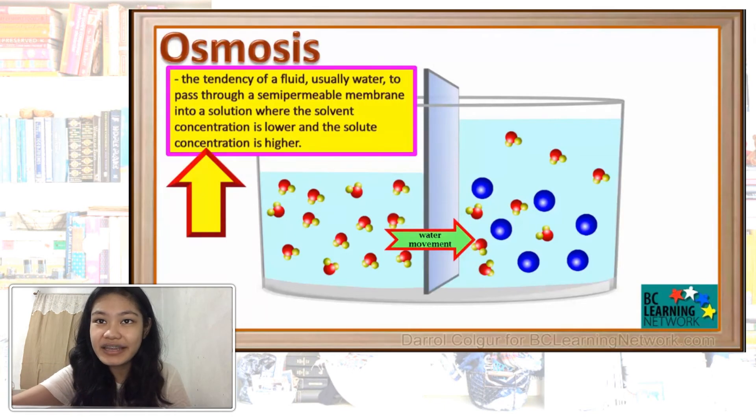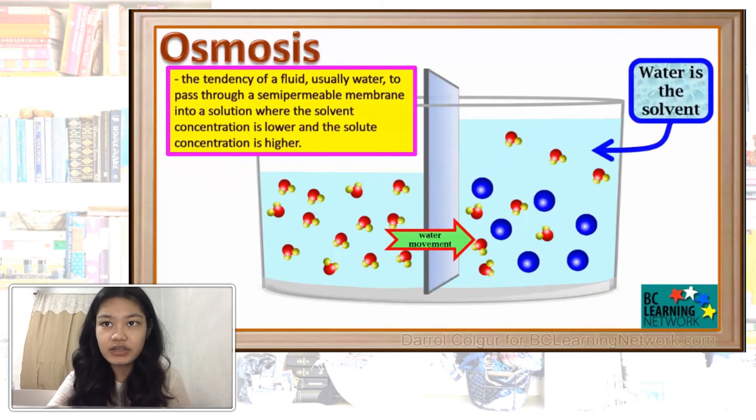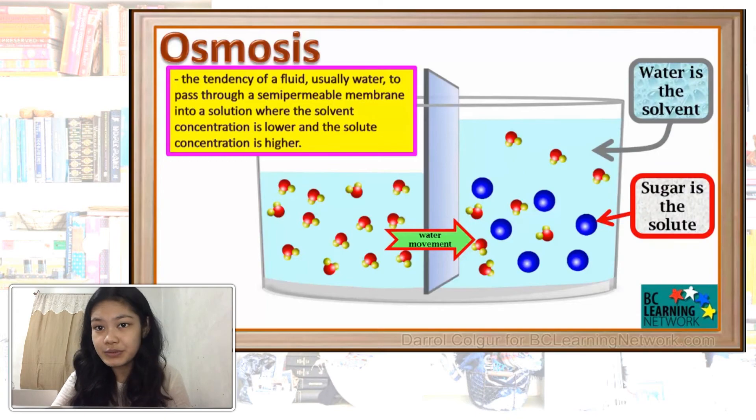Osmosis can be defined as the tendency of a solvent, usually water, to pass through a semi-permeable membrane into a solution where the solvent concentration is lower and the solute concentration is higher. In this case, water is the solvent and sugar is the solute. The substance dissolves in the solvent.